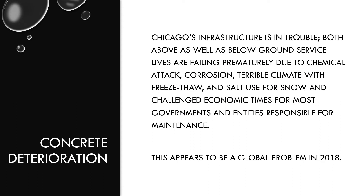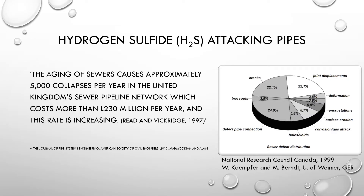I live in Chicago, so I talk a lot about Chicago's infrastructure, and I've learned a lot about it through this course. The infrastructure isn't just above ground but below ground as well, so we need to look at the entire infrastructure system, and that's why we continue to push for an infrastructure bill. Hydrogen sulfide attacking of pipes is causing 5,000 collapses in the UK a year — very expensive. The pie chart shows 9% of pipes are failing because of corrosion and gas attack.